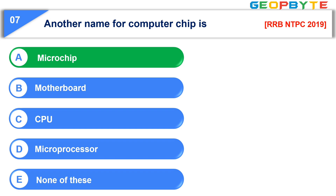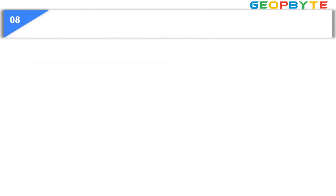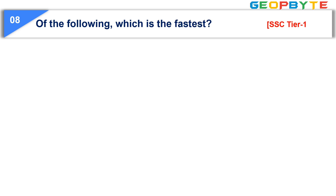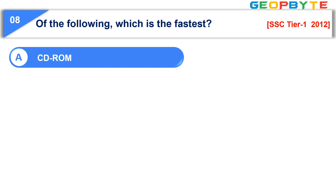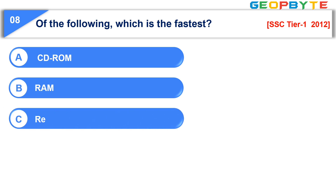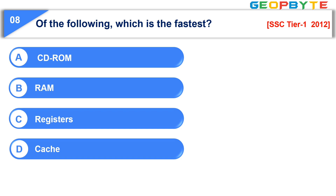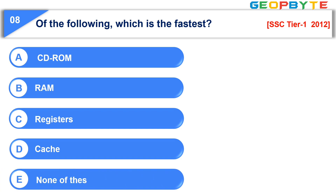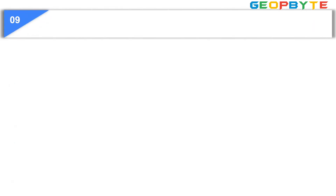Question number eight: Of the following, which is the fastest memory? Option A: CD-ROM; option B: RAM; option C: registers; option D: cache; option E: none of these. The correct answer is option C: registers.